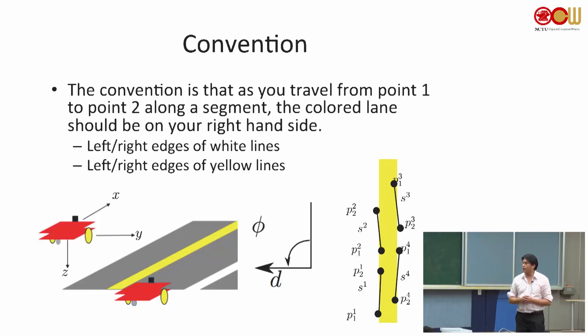And about the convention. The Duckiebot is over here. And we define that forward is the X direction. So this is the X direction and this is the Y direction. And as for the d and the phi, so this is actually what we showed in the previous slide. So this direction is the positive and this is the angle.